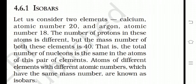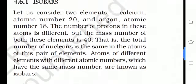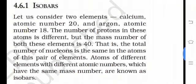The number of protons is different, but both have the same mass number, that is 40. So the total number of nucleons is the same in the atoms of this pair of elements. Atoms of different elements which have the same mass number are known as isobars. Calcium ka atomic number 20 but mass number 40, aur argon ka atomic number 18 but mass number 40. Isobars matlab aise elements jinka atomic number different ho but mass number same ho.